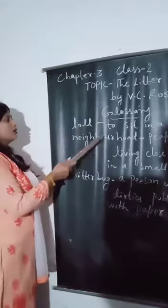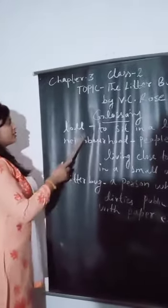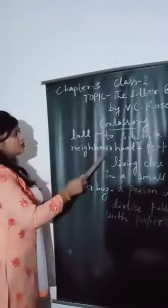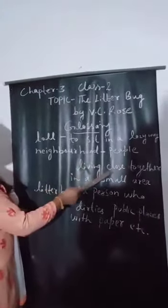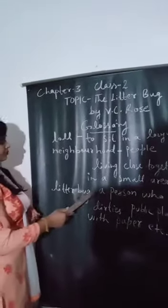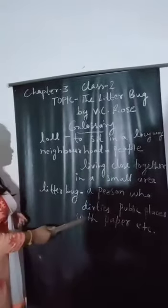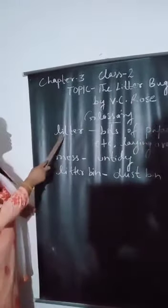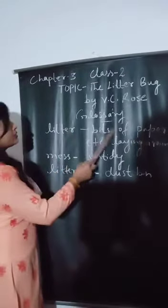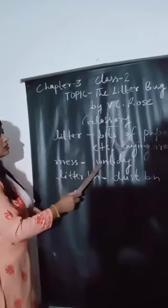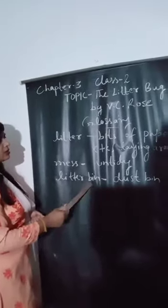Here are the difficult word meanings. Let's see the pronunciation and understand that. Loll: to sit in a lazy way. Neighborhood: people living close together in a small area. Litter bug: a person who dirties public places with paper, etc. Litter: little bits of paper, etc. laying around. Mess: untidy. Litter bin: dust bin.